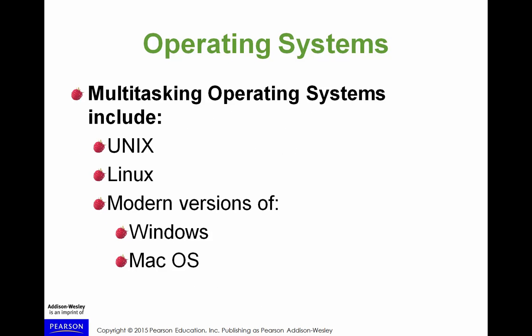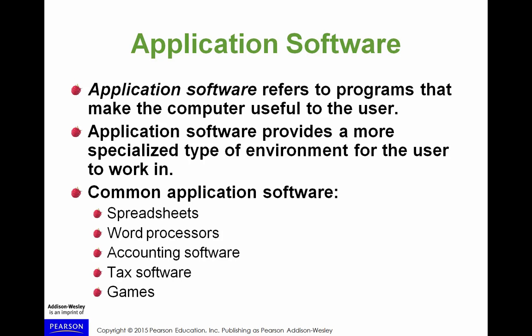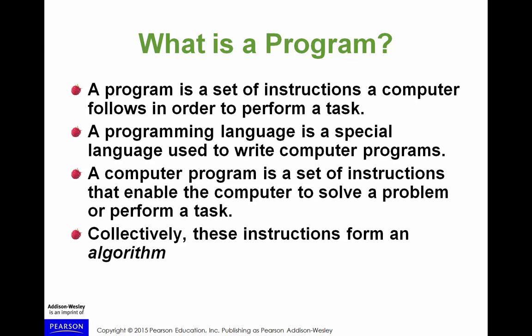There are two types of software. We talked about operating system software and application software. The operating system allows the computer to function and allows all of the input and output devices to function because it contains low-level code that interprets, for instance, key presses and makes them into something you can use in a program. Application software then takes those recognized key presses and allows you to do something with them that is of use to the user.